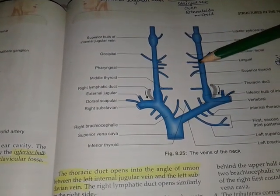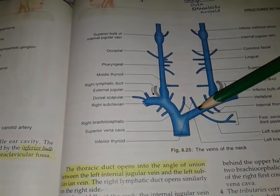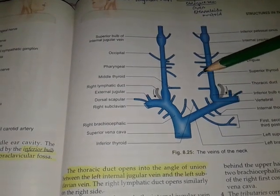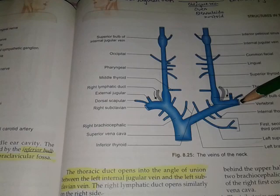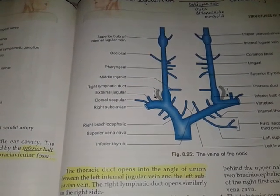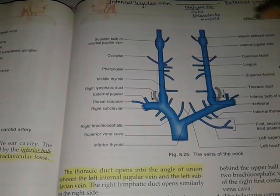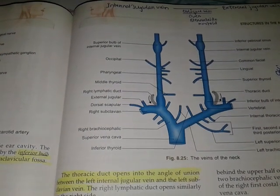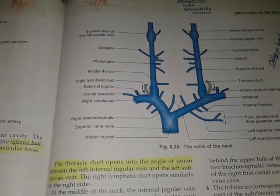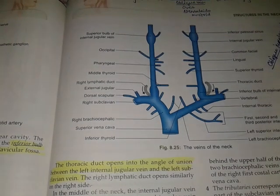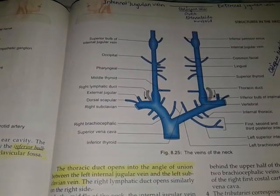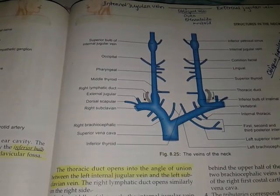Finally, the internal jugular vein becomes continuous as the brachiocephalic vein by joining the subclavian vein — meaning the internal jugular vein and the subclavian vein join to form the brachiocephalic vein. Now, before we learn the tributaries, the internal jugular vein is present in the carotid sheath along with the common carotid artery.